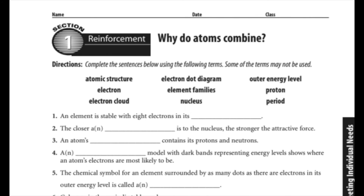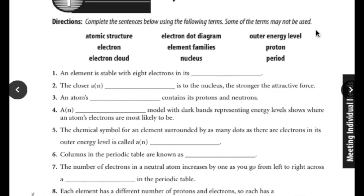Chapter 6, Lesson 1 reinforcement: why do atoms combine? We'll go through this together because chapter 6 lesson 1 is split into two sections. Number one: an element is stable with eight electrons in its outer energy level — if it's got a full outer energy level, it is stable and doesn't want to react. Number two: the closer an electron is to the nucleus, the stronger the attractive force. The electron has a negative charge; the nucleus has an overall positive charge because of the protons; that force pulls them together, and the closer they are, the stronger that force. Number three: an atom's nucleus contains its protons and neutrons — the nucleus has an overall positive charge.